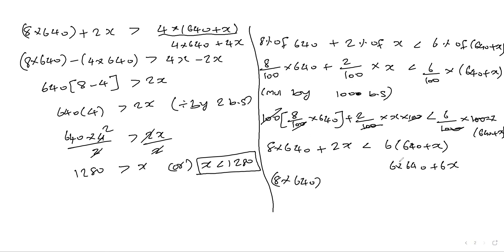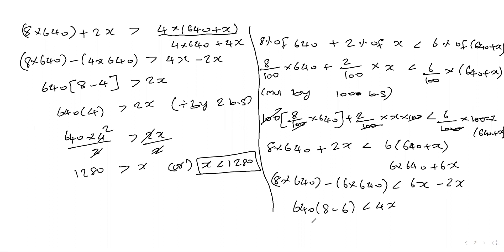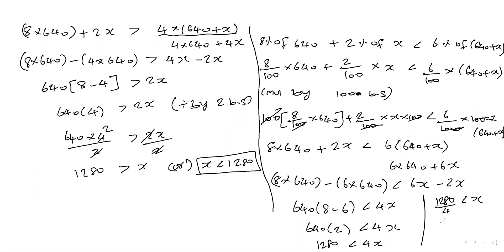Moving terms: 8 into 640 minus 6 into 640 is less than 6x minus 2x, so 640 into (8 minus 6) is less than 4x. That gives 640 into 2 equals 1280, so 1280 is less than 4x. Dividing both sides by 4: 1280 divided by 4 is less than x, giving 320 less than x, or x is greater than 320.